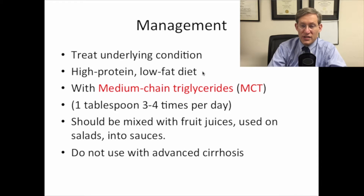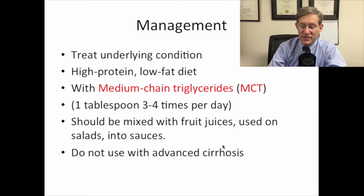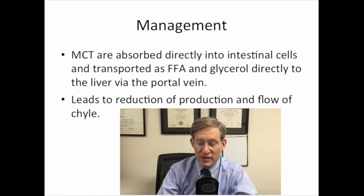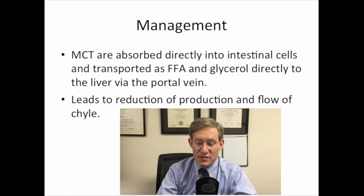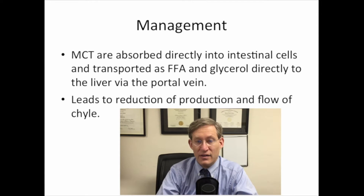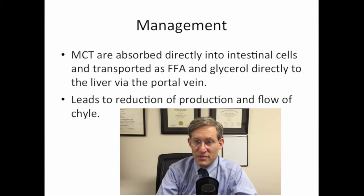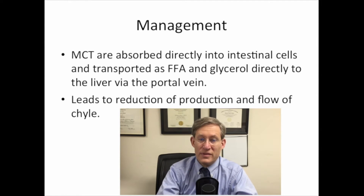The recommended diet is high protein and low fat with medium-chain triglycerides (MCT), following a listed recommended regimen. Do not use medium-chain triglycerides in patients with advanced cirrhosis, as this can cause neurological problems. MCTs are absorbed directly into intestinal cells and transported as free fatty acids and glycerol directly to the liver via the portal vein, reducing the production and flow of chyle. It is long-chain triglycerides that must be placed into chylomicrons and flow through the thoracic duct, whereas MCTs can go directly into the bloodstream due to their water-solubility.